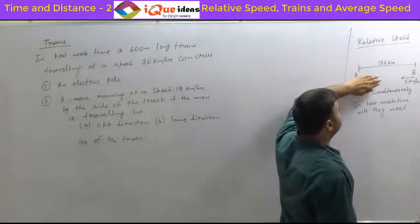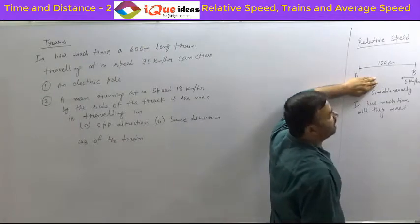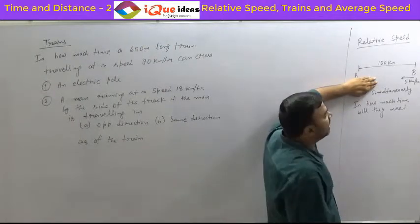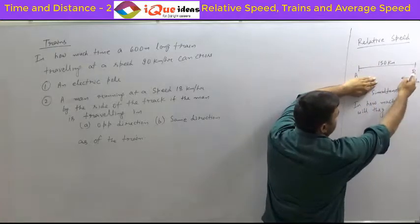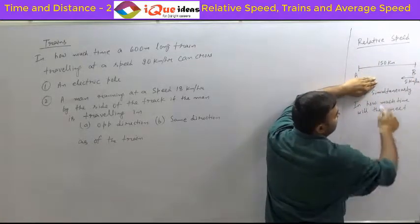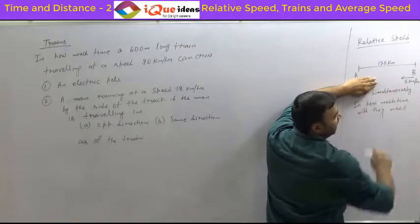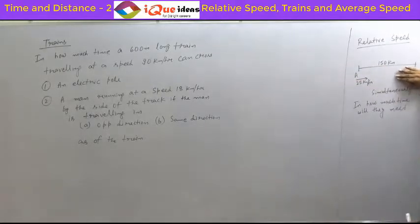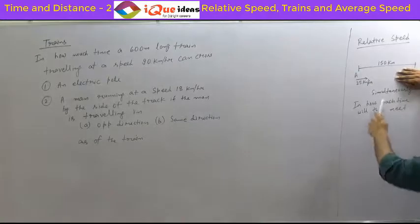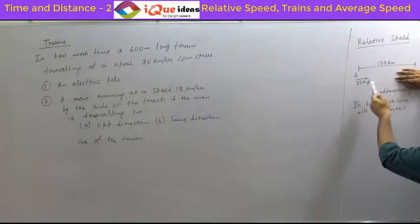Suppose the person from A wasn't there — only the person from B. How much time would the person starting from B take to reach A? You simply divide the distance by the speed: 150 divided by 5, that is 30 hours. Similarly, if the person from B wasn't there, how much time would the person from A take? 150 divided by 25, that is 6 hours.